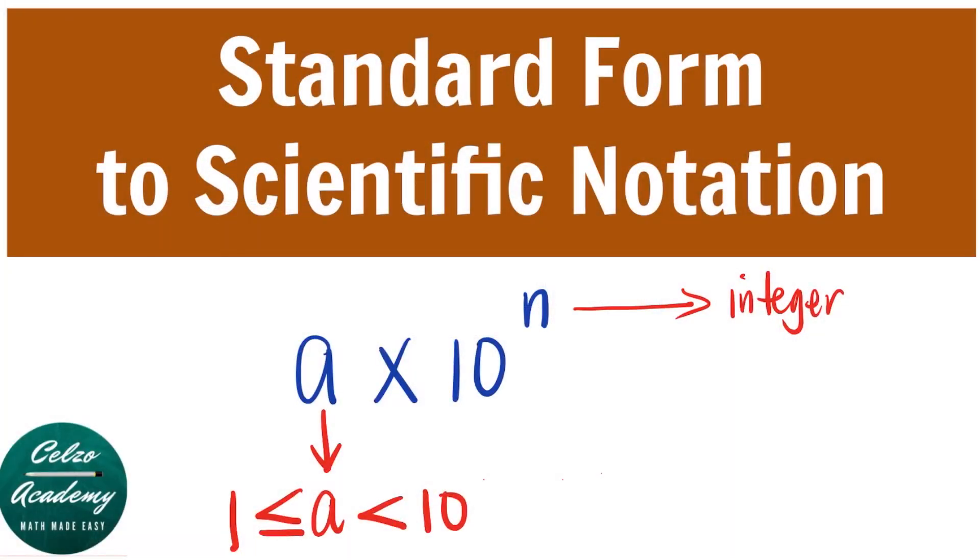Scientific notation is in the form a times 10 to the power of n. And a here should be more than or equal to 1, but less than 10. And n here is an integer.